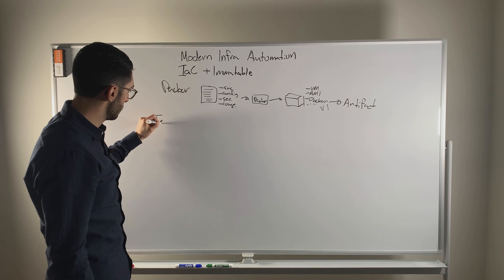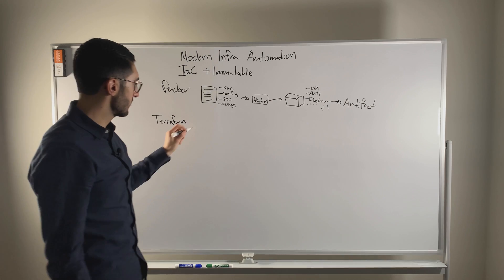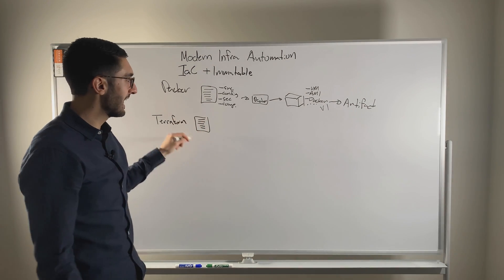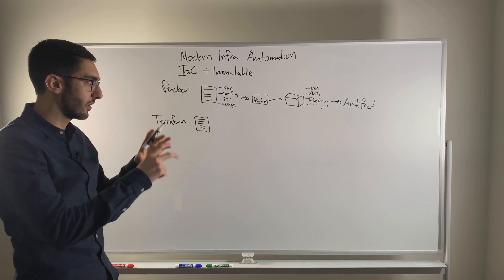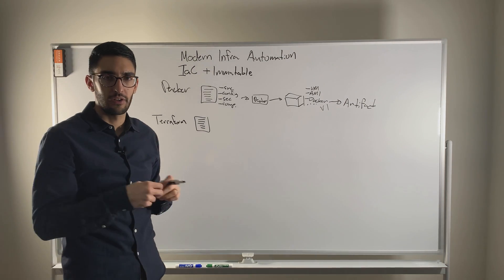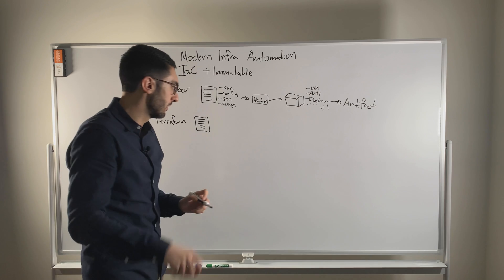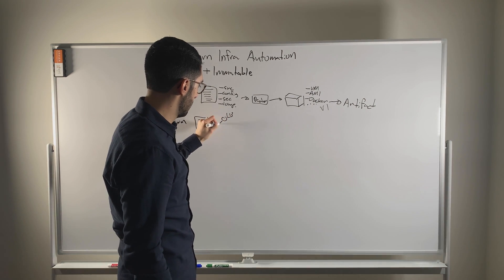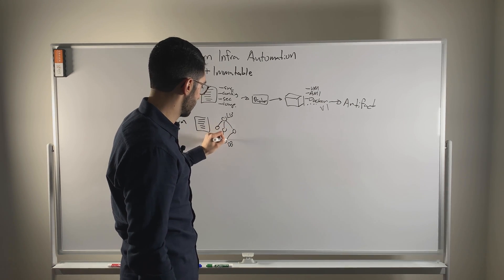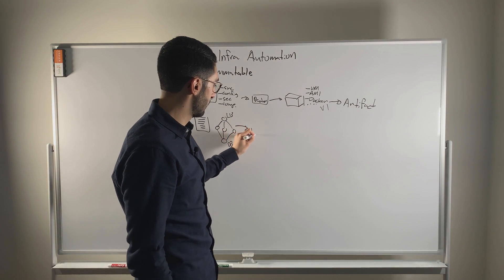Next is Terraform. You're going to notice there's a recurring pattern here, which is it always starts with infrastructure as code. Again, we take this infrastructure as code definition of all the pieces of infrastructure we care about — so I might need a load balancer that goes to a set of web servers that talks to a database, for example. I'm going to declare that through my infrastructure as code definition and then feed that into Terraform.